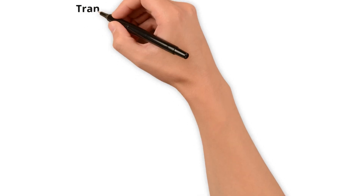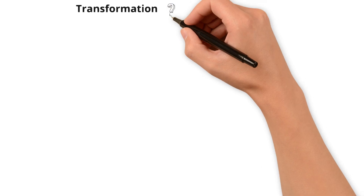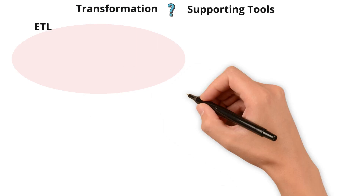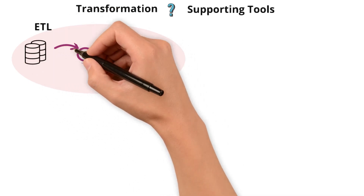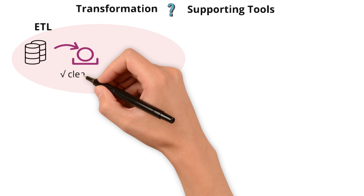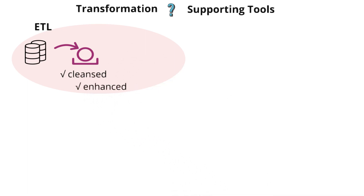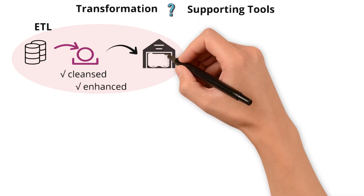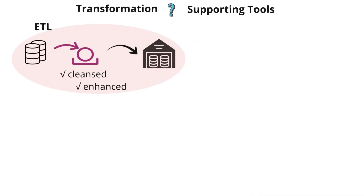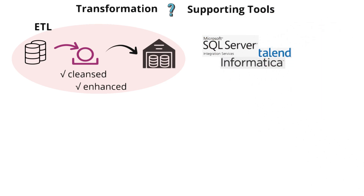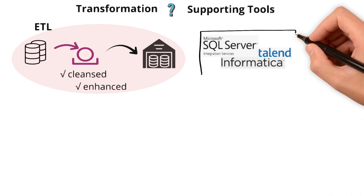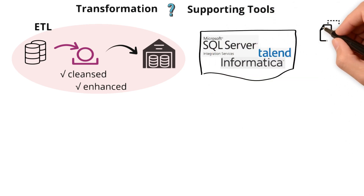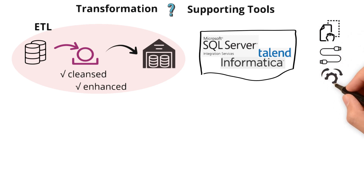How is the transformation done in both worlds, and what are the supporting tools? In ETL, the extracted data is first refined in a staging area where it is cleansed and enhanced with business rules to meet the specific needs of your data warehouse. Tools like Microsoft SSIS, Informatica, and Talend facilitate this. These tools offer user-friendly interfaces with drag-and-drop capabilities and diverse data connectors, streamlining complex transformations.